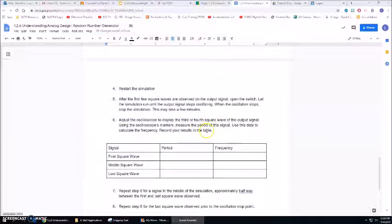And then you need to adjust the oscilloscope to display the third or fourth square wave of the output signal using the markers. So measure the period of the signal and then use the data to calculate the frequency and record your results in this table.